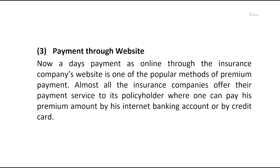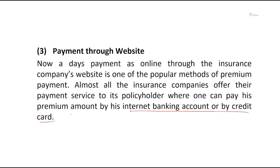Third popular method is payment through websites. Nowadays, online payment through the insurance company's website is one of the popular methods, and almost all insurance companies offer this service where one can pay by internet banking or by credit card. Another method is the Electronic Clearing System — also called ECS — an automated, simplest, and most convenient facility that debits premium from the insured's specified bank account to the insurer's account on the due date.